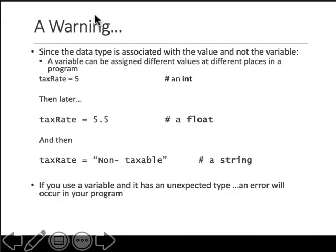Then a simple warning that you can change data types also. Like you define a variable called taxRate equals 5, down in the code you can later say 5.5, so it changed from integer to a float. Later down in the program you can even put it as a string, the same variable.